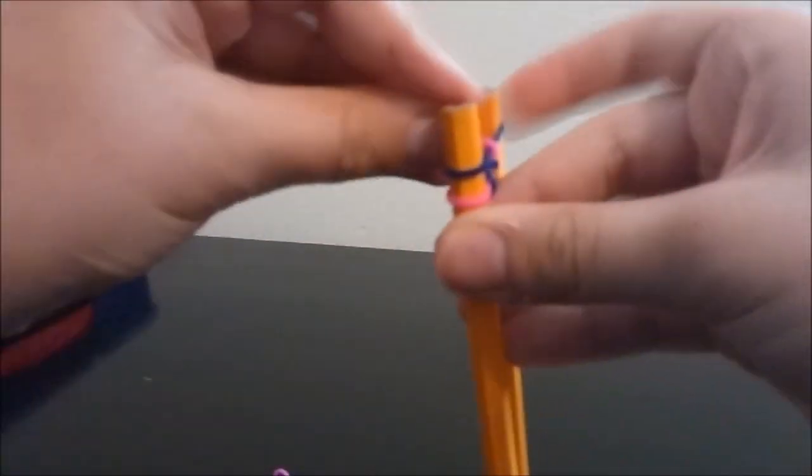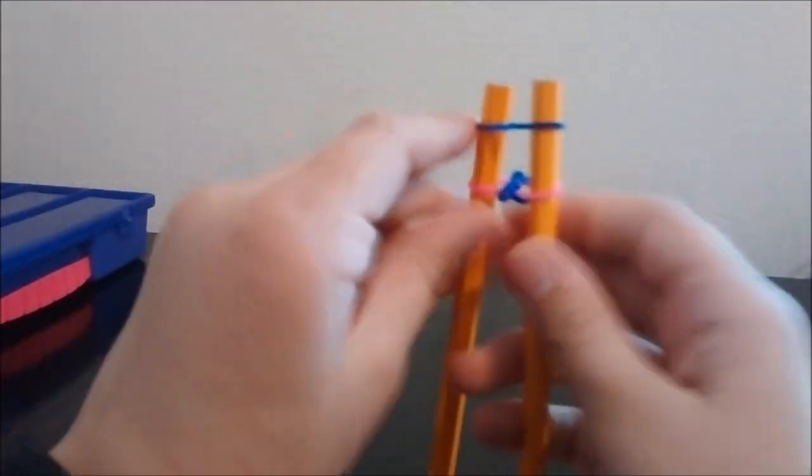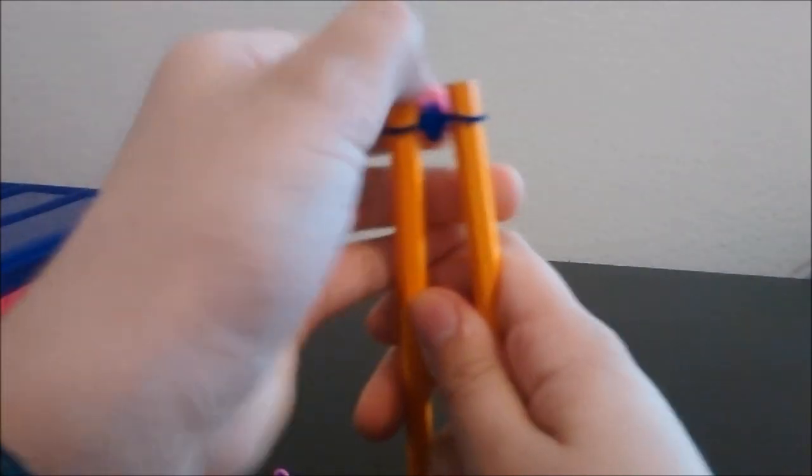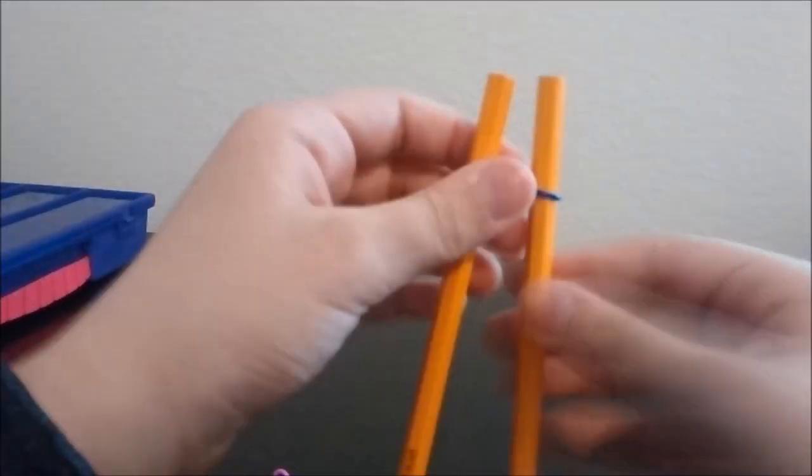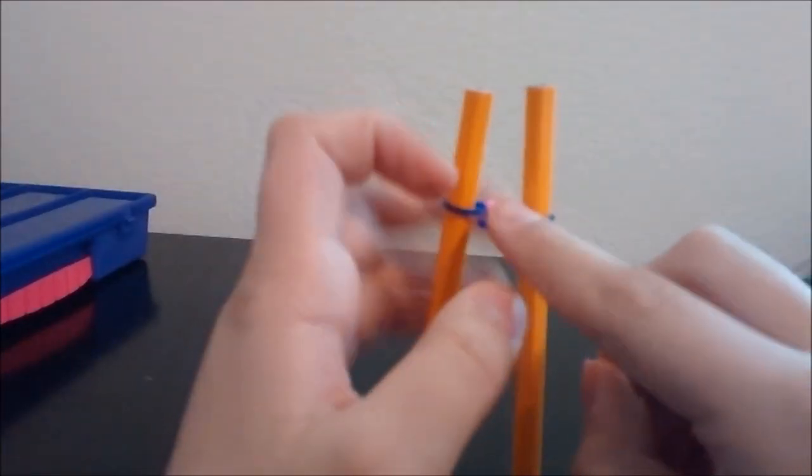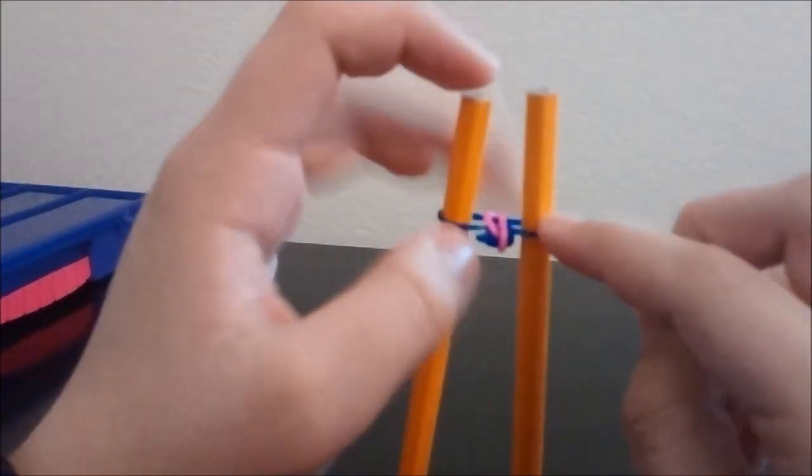So what you're going to do is you're just going to keep pulling up the bottom until your bracelet is done. I'm going to show you this about three more times, and I believe you should be able to get it on your own. Put on the color that you pulled up, or just watch the pattern. So my next one's going to be pink.